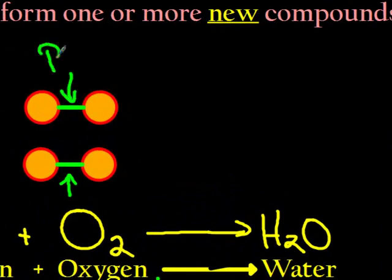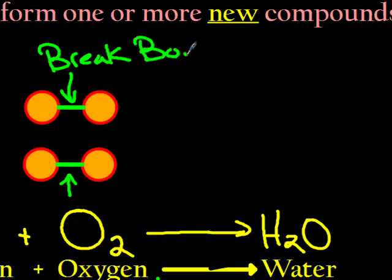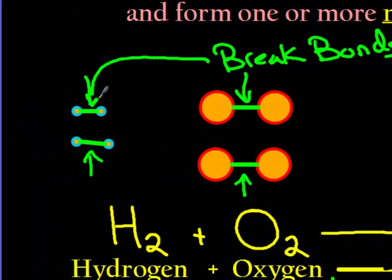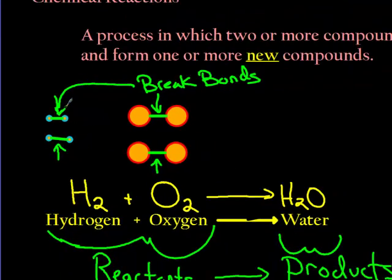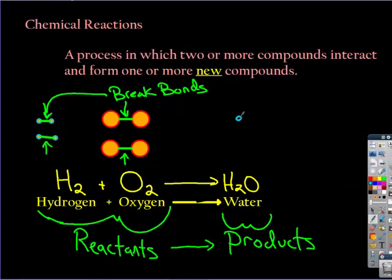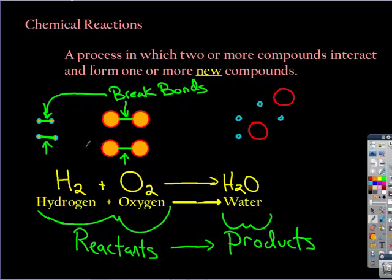We're going to break all of the bonds here, and like I say, that requires some energy. Once that happens, I'll use colors to represent what we have. Our hydrogen can start to pair up with other things — they're going to pair up with our oxygen molecules. The breaking of the bonds frees the atoms up from each other. In this case, the hydrogen and oxygen atoms separate, and now they can start to form new bonds. The hydrogens bond to the oxygen instead.